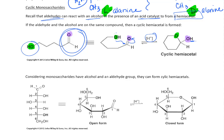This is called a hemiacetal. Hemi is half, and an acetal — the one you probably got most familiar with was a full cyclic acetal where your ring had two oxygens in it. But this one's a hemiacetal because you only have one oxygen in the ring and then you have an OH group external to the ring.